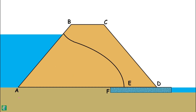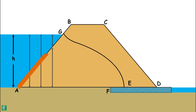Let's say this line represents the top flow line — all seepage through the dam occurs below this line. The height of the water level on the upstream side of the dam is denoted as small h. The total head at each point of the upstream face AB up to the point G is the same, equal to h. Hence every point on line AG is at equal potential, making AG an equipotential line.